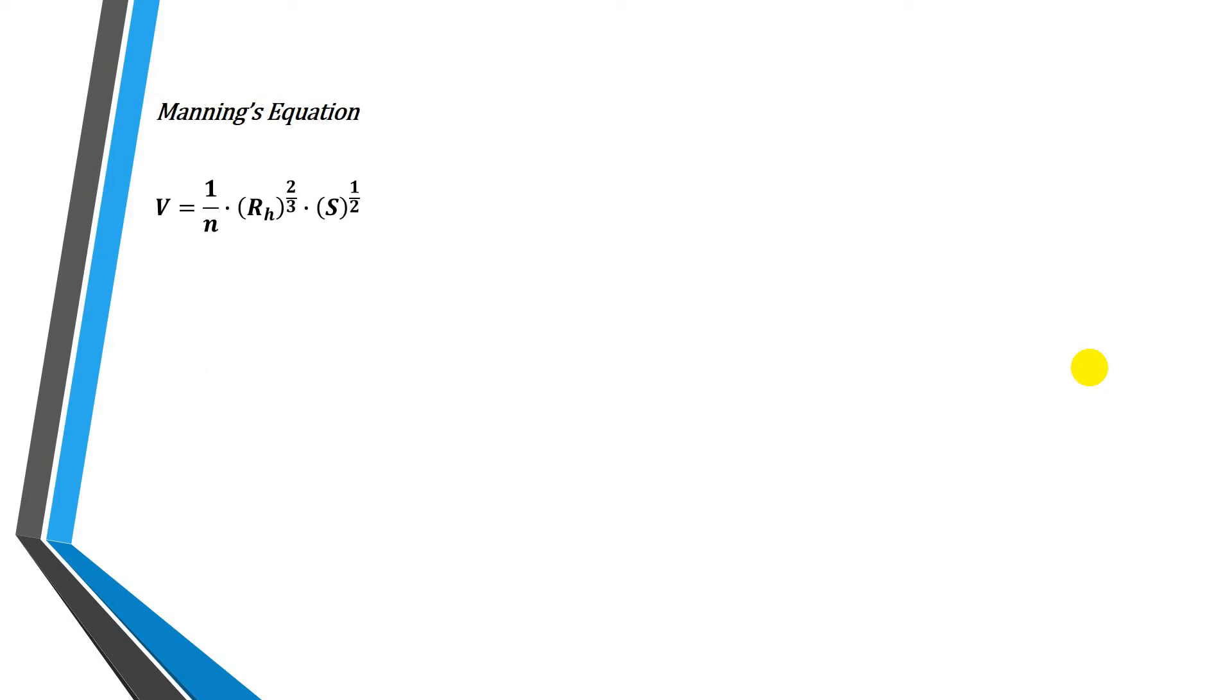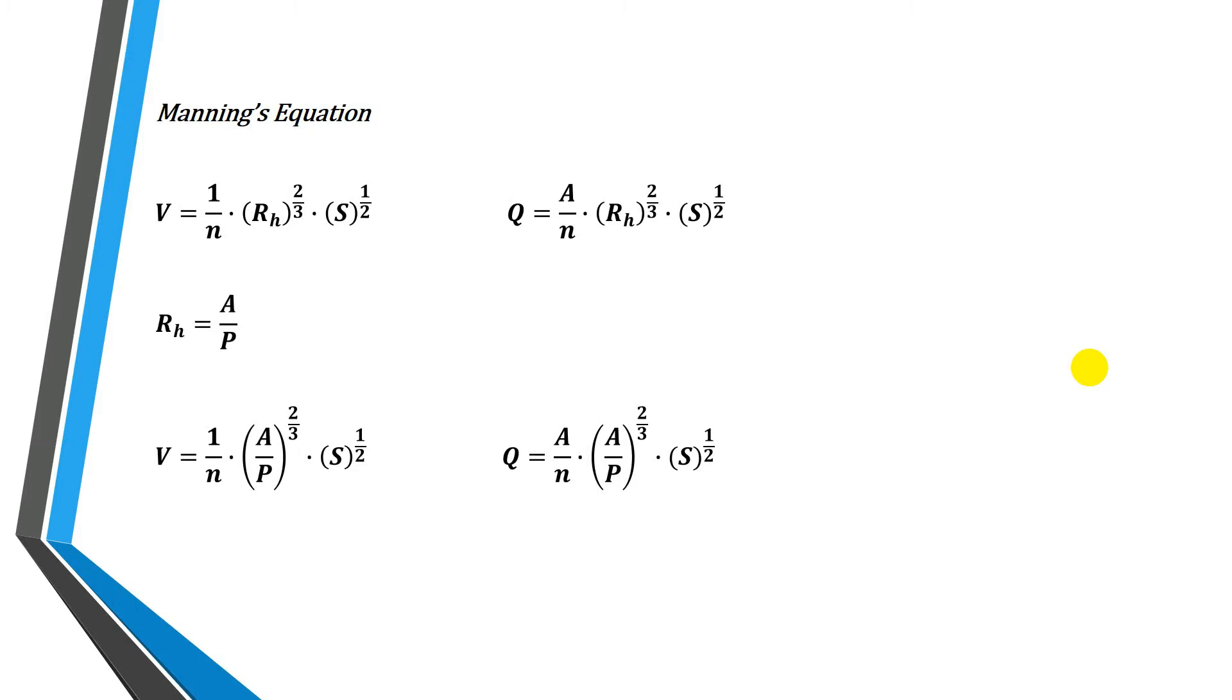Using the continuity equation, you can also express this equation as a function of the discharge and the area of the cross-section, as shown. Where Q is the discharge in cubic meters per second, A is the cross-sectional area, so we get the following equations. If we express the hydraulic radius as the area divided by the wet perimeter, we get the following two equations.